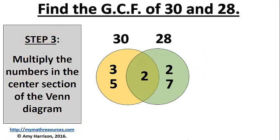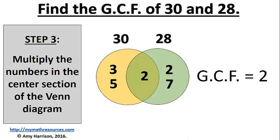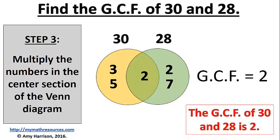For our last step, we need to multiply the numbers that are in the center section of the Venn diagram. Oh wait, how are we going to multiply one number? Well, I guess we can't do that. If there's only one number in the center of the Venn diagram, that is the greatest common factor. So in this example, the greatest common factor of 30 and 28 is 2.